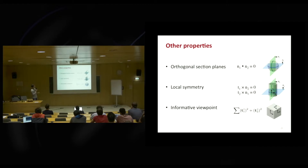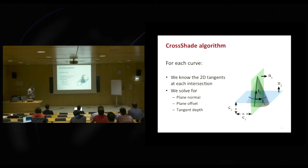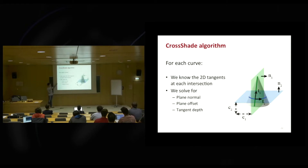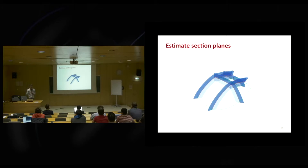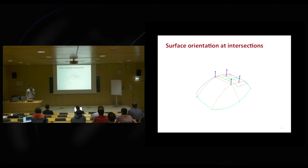We could express all of them as a function either of the normals of the section planes or the tangents of the actual curves. We then formulate an optimization which, for each set of intersecting curves, produces a set of constraints. By combining all of them in a global system we can solve for the normal of the section plane, the offset with respect to the origin, and the depth of the tangent vectors of each curve in a least-squares sense. Given a line drawing of a computer mouse, we ask the user to indicate which curves are cross-sections, here shown in orange.